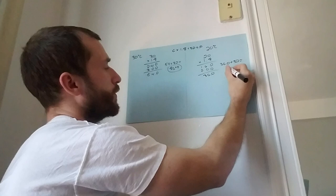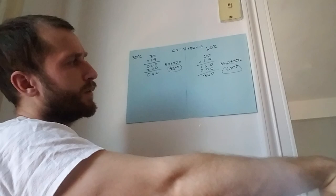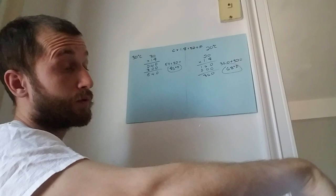So 68 degrees Fahrenheit, that's just short of room temperature, which means that 20 degrees Celsius as well is just short of room temperature. You can see that's a pretty high number. 30 degrees Celsius is quite hot.